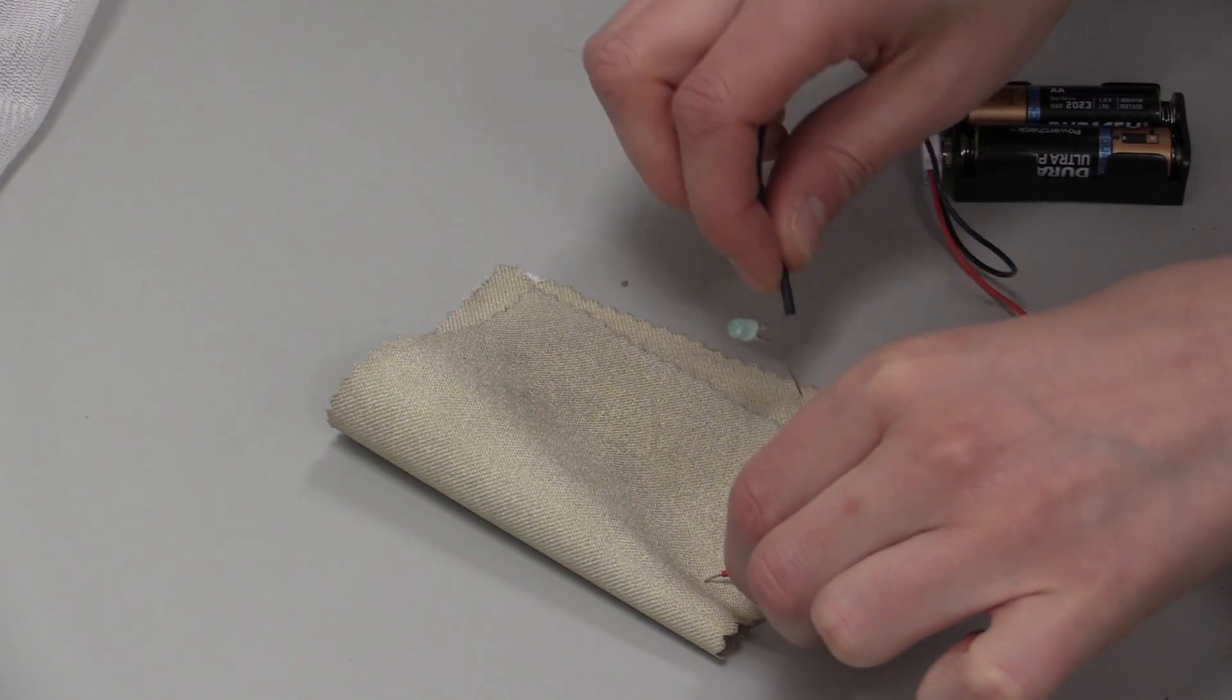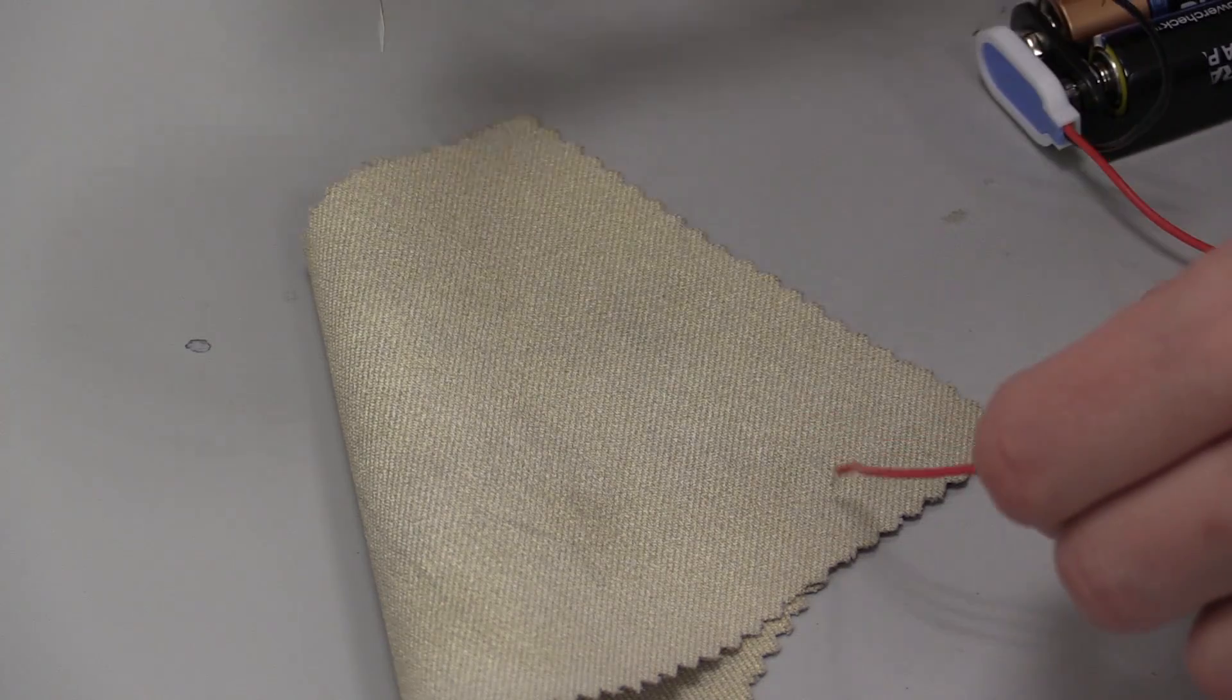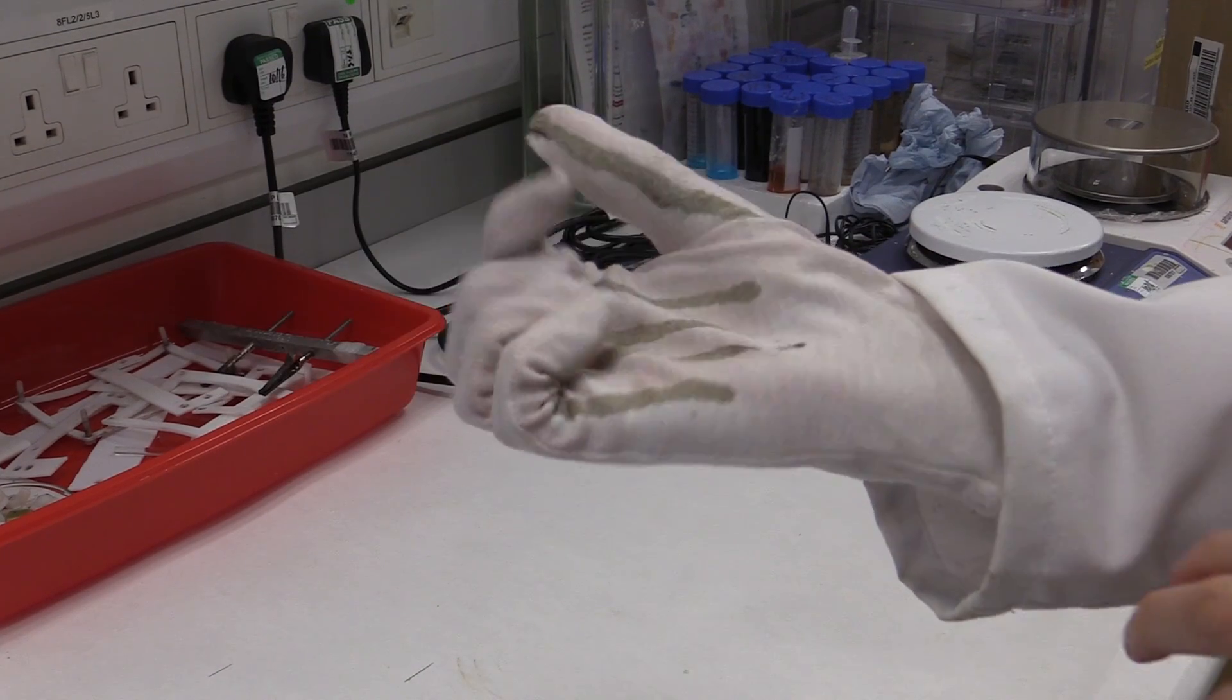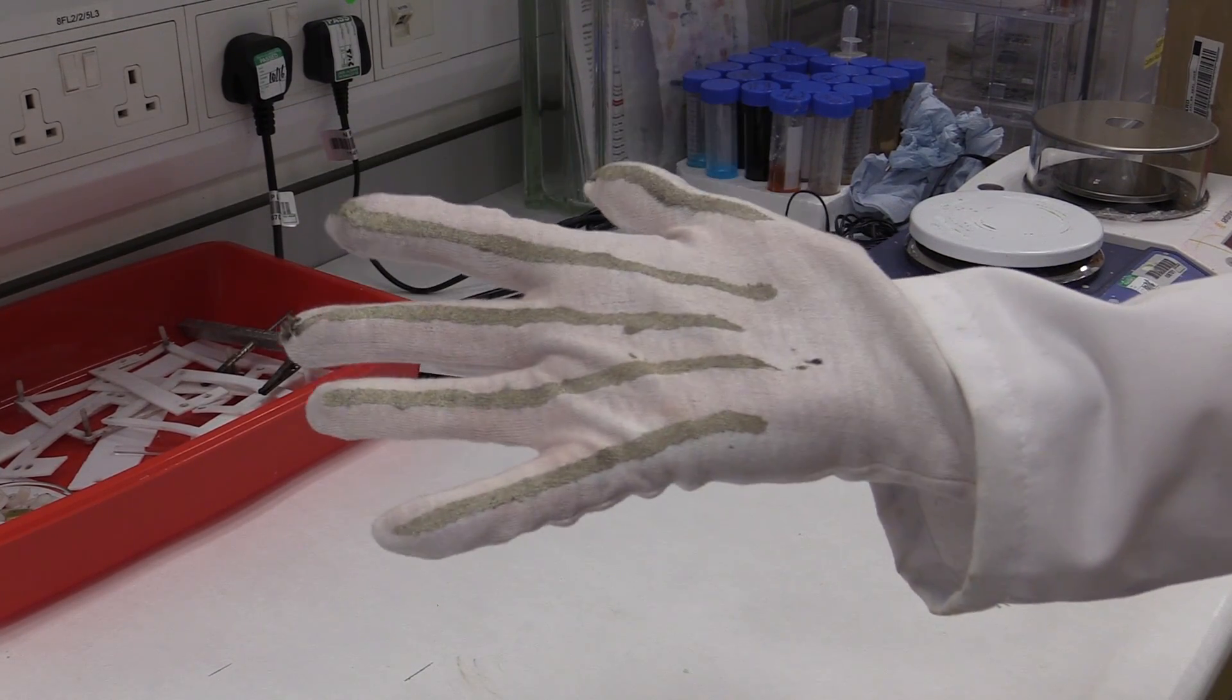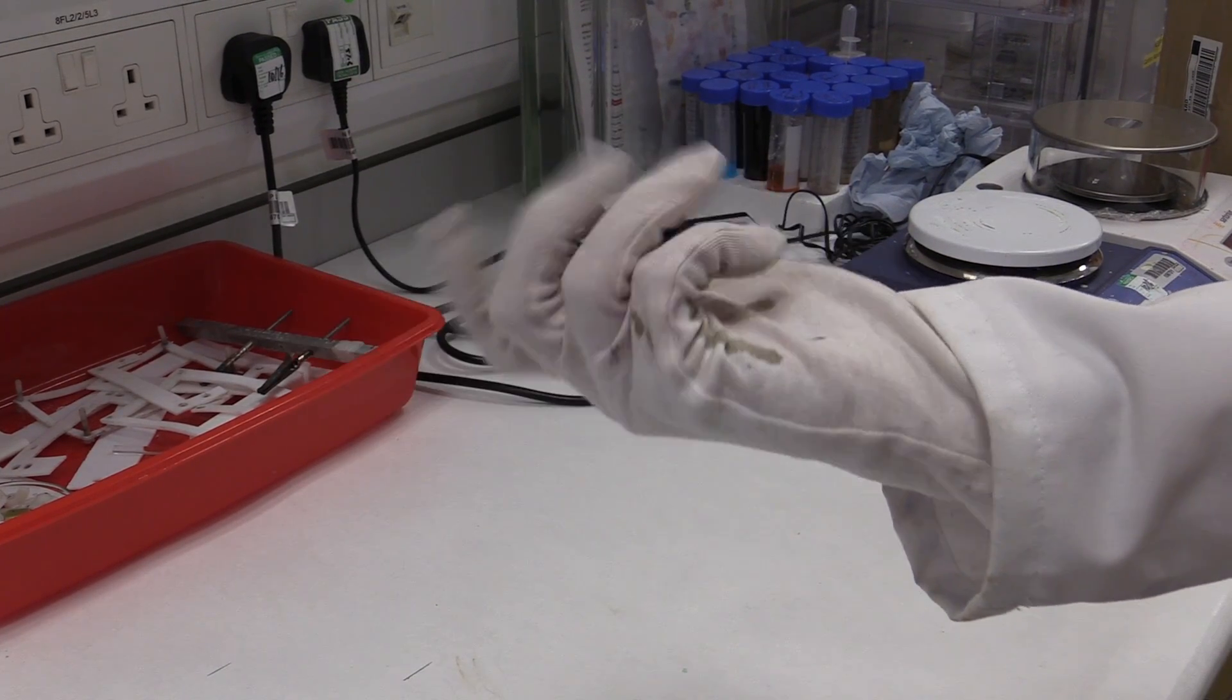To realise such clever clothing, we need conductive fabrics. For example, where a cable is required for a device such as a sensor, conductive tracks could be used on the garment instead.